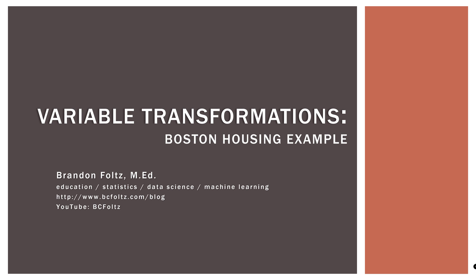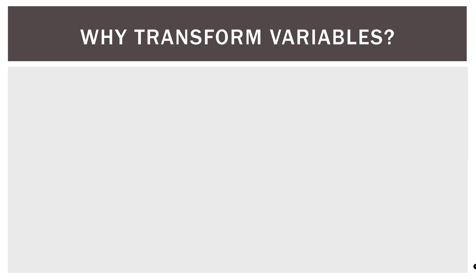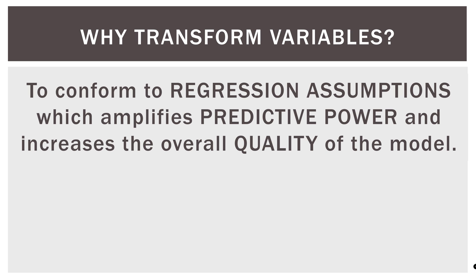And as always, please like, comment, share, and subscribe. Let's get going. So why do we transform variables in the first place? A very quick review. We transform variables in the context of regression to conform to regression assumptions, which in turn amplifies predictive power and increases the overall quality of the model.